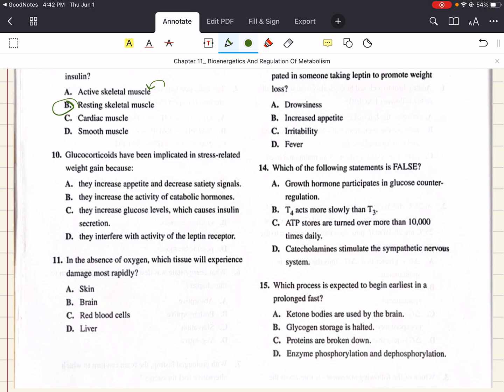Ten says, glucocorticoids have been implicated in stress-related weight gain because, well, short-term glucocorticoid exposure causes a release of glucose and the hydrolysis of fats from adipocytes. However, if this glucose is not used for metabolism, it will cause an increase in glucose level, which will promote fat storage. And then the net result is the release of glucose from the liver to be converted into lipids in the adipose tissue under insulin stimulation. Considering that all in mind, then they've been implicated in stress-related weight gain because they increase glucose levels, which causes insulin secretion in short. And so that means that the answer to 10 is going to be C.